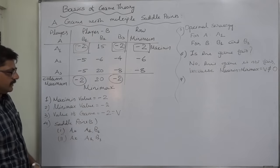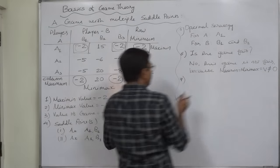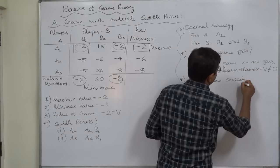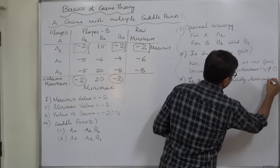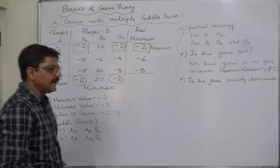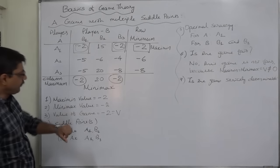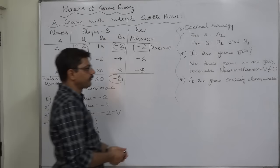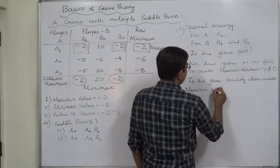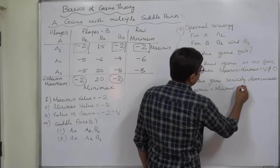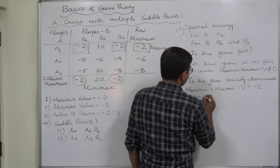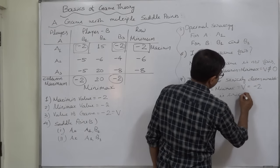The last basic question: is the game strictly determinable? A game is strictly determinable if maximin equals minimax equals value of game. In this case, yes — all three are equal to minus 2, so this game is strictly determinable.